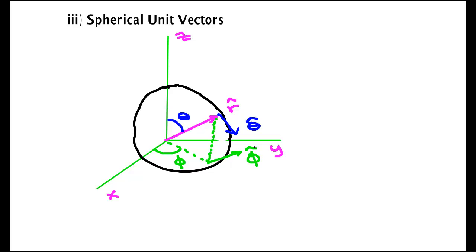Three vectors: r-hat increasing r, theta-hat increasing theta, phi-hat increasing phi.